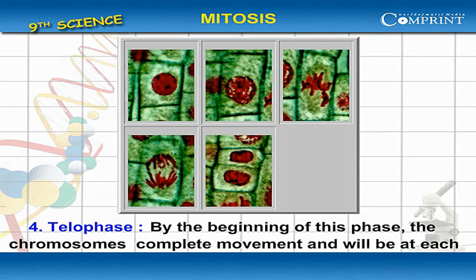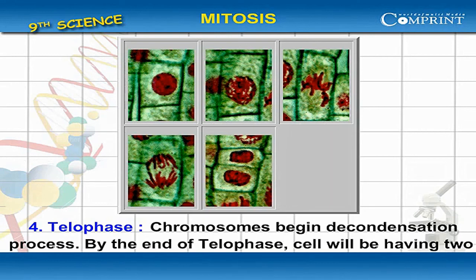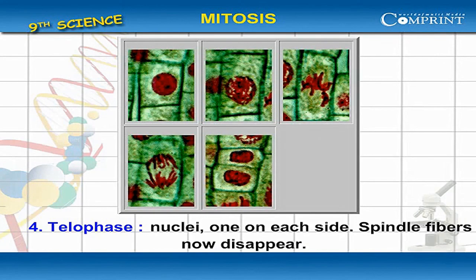Telophase. By the beginning of this phase, the chromosomes complete movement and will be at each end of the cell. The nuclear membrane, nucleolus, and the other nuclear structures reappear. Chromosomes begin the decondensation process. By the end of telophase, the cell will be having two nuclei, one on each side. Spindle fibers now disappear.